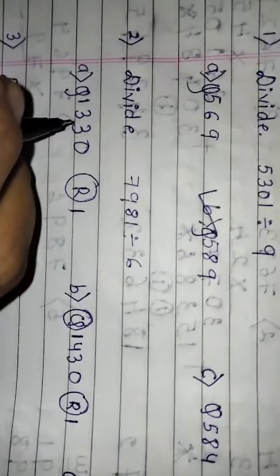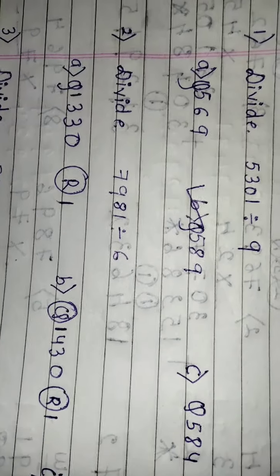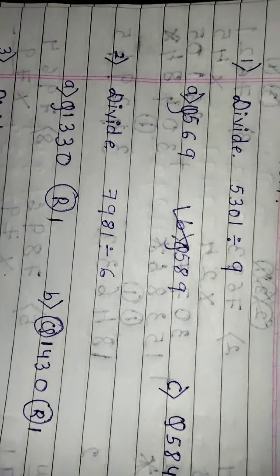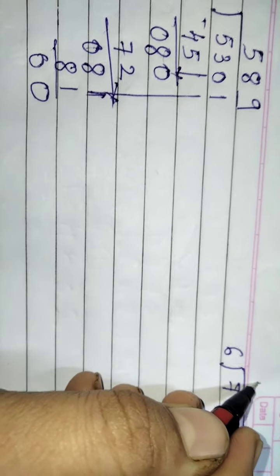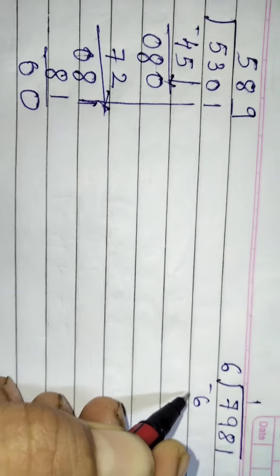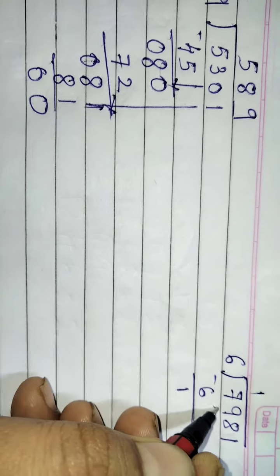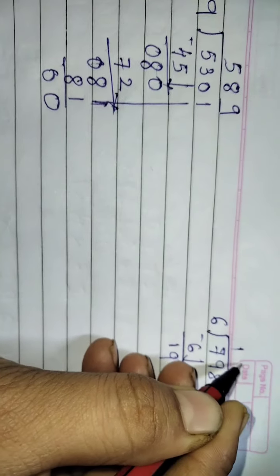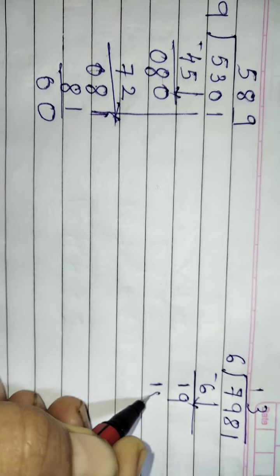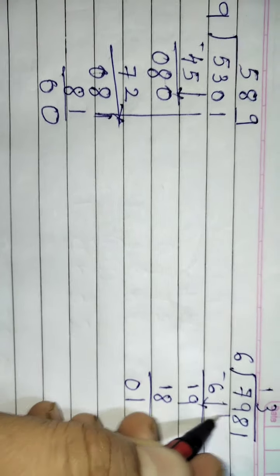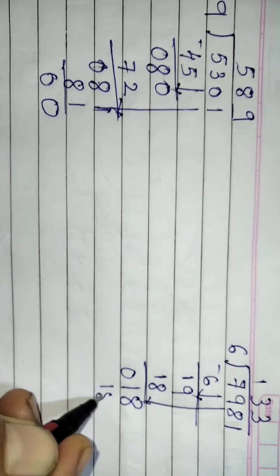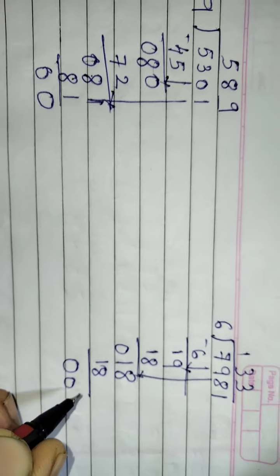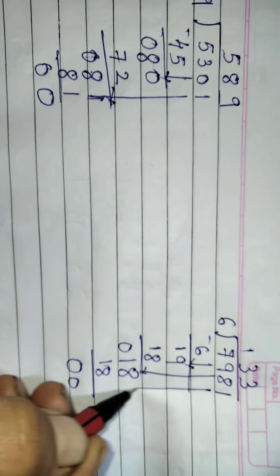Now next divide. 7981 divided by 6. 6 1's are 6. 6 3's are 18. 6 3's are 18. 1 will come down.